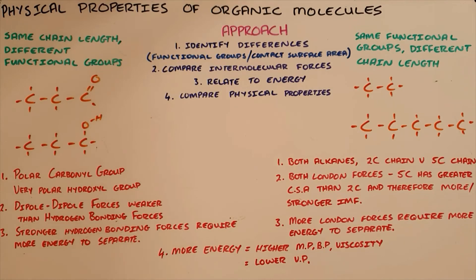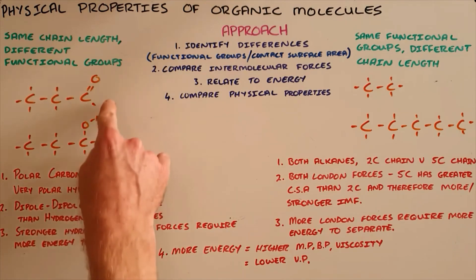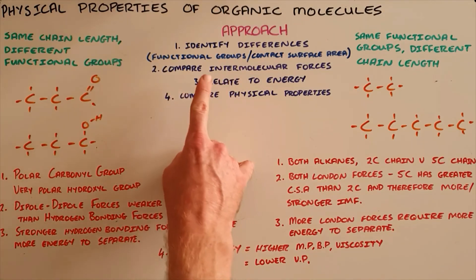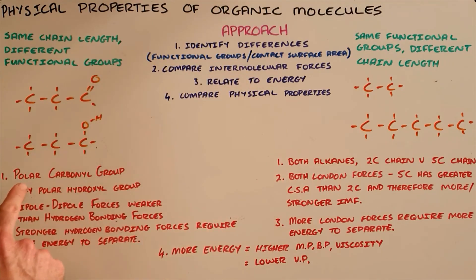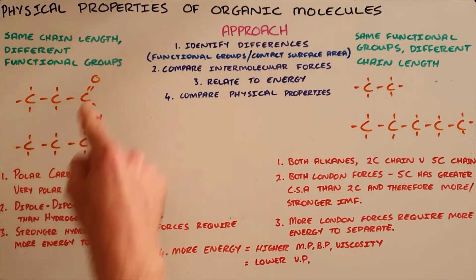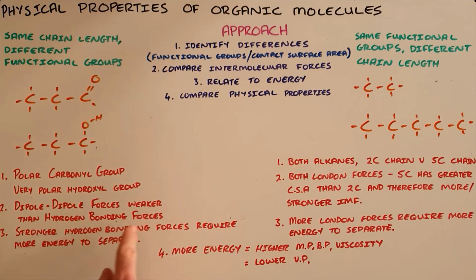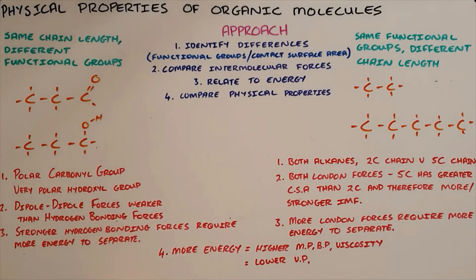The first category of question involves two or more molecules that have the same chain length but different functional groups — for example, an aldehyde with a formyl group and an alcohol with a hydroxyl group. Step one: identify the differences — the aldehyde has a polar carbonyl group while the alcohol has a very polar hydroxyl group. Step two: compare intermolecular forces — the polar aldehyde has dipole-dipole forces, which are weaker than the hydrogen bonding forces of the alcohol. Step three: relate to energy — the stronger hydrogen bonding forces require more energy to separate. Step four: therefore, since more energy is required, the alcohol would have a higher melting point, boiling point, or viscosity, and a lower vapor pressure than the aldehyde.